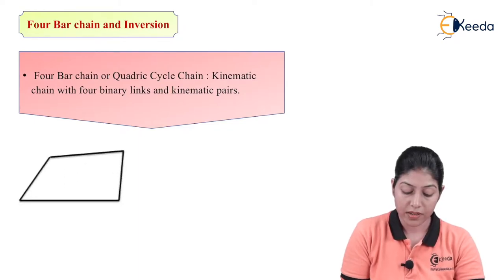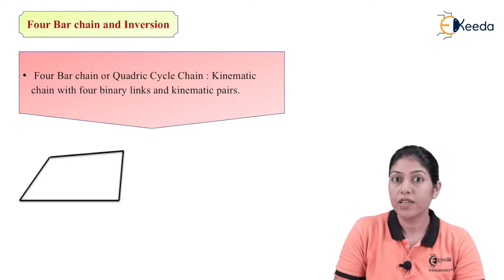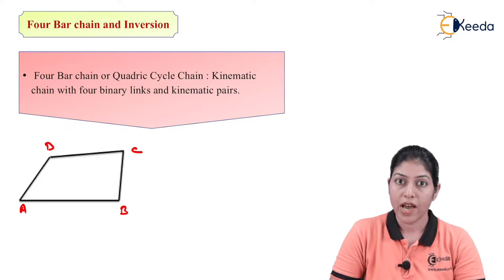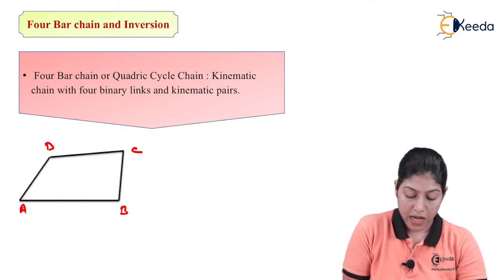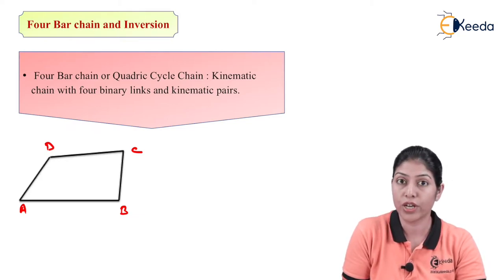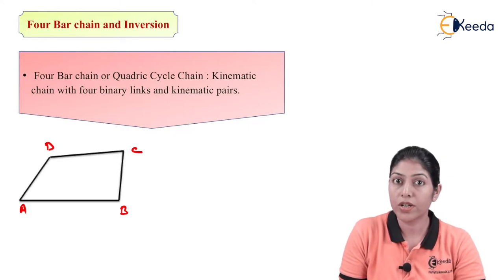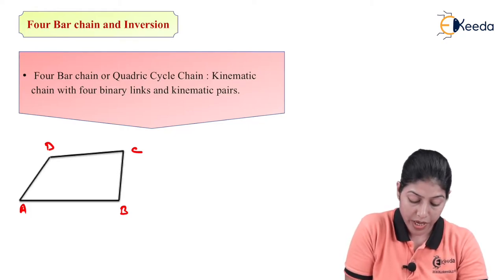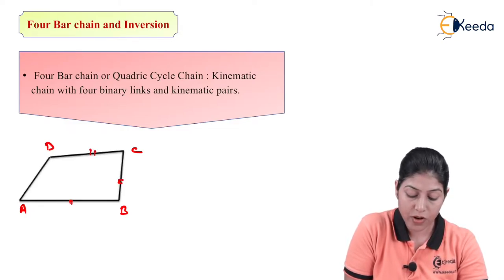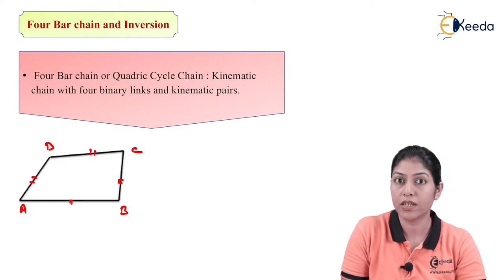Here we have this particular 4-bar chain, which is the simplest type of kinematic chain having one degree of freedom. There are 4 links: AB, BC, CD and AD, and each link is joined together forming a turning pair. With 4 links we form 4 turning pairs. AB and BC form one pair, BC and CD form another turning pair.